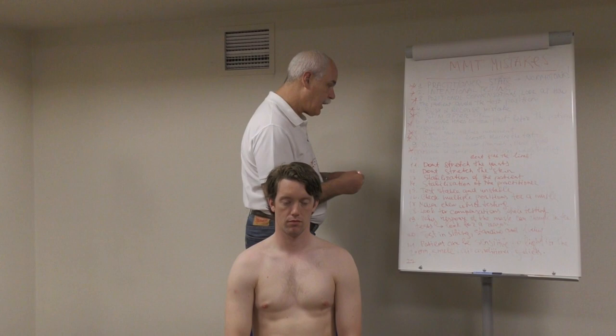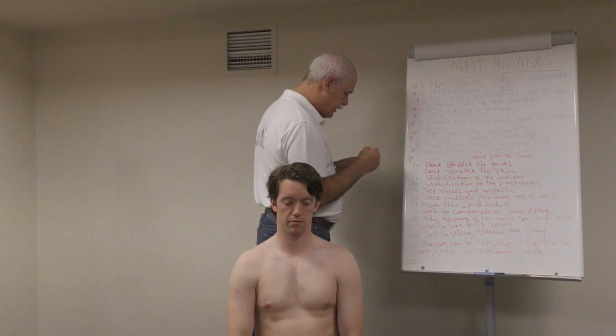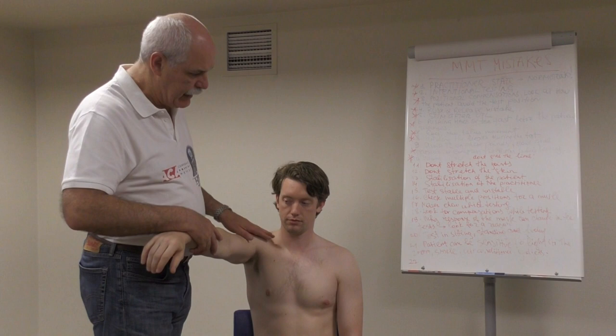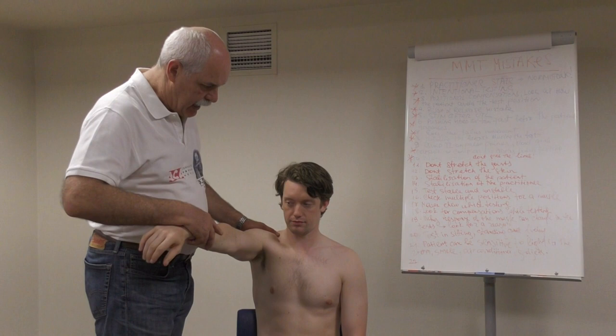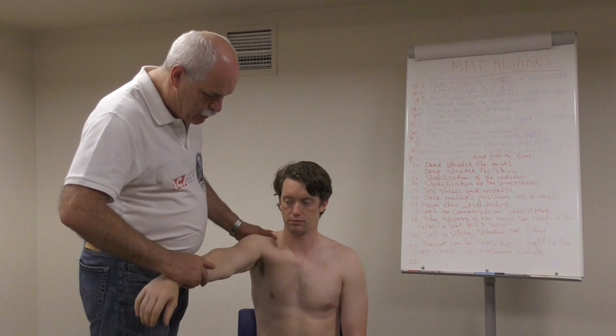Wrong vector. The vector is important. For example, if I want to test the pectoralis major clavicular, I need to test on the correct side and slightly lower. If I test with a different vector — for instance pushing that way, or pushing outside and too far down — I am probably going to test a different muscle, not the pectoralis major clavicular.